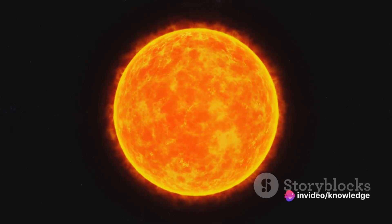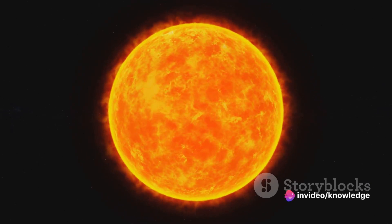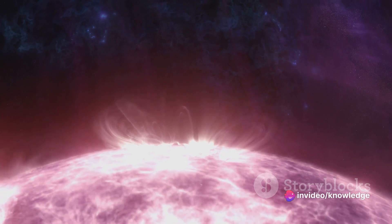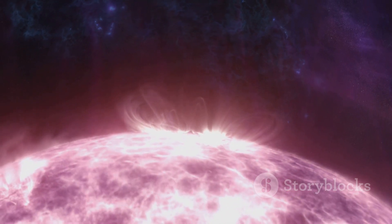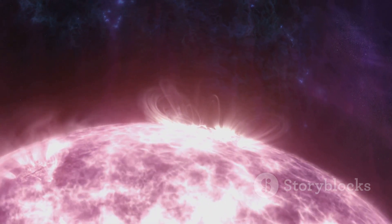Now, our sun is classified as a small to average-sized star. Stars of this size don't actually explode in a supernova. Instead they shed their outer layers and leave behind a dense core, a white dwarf.